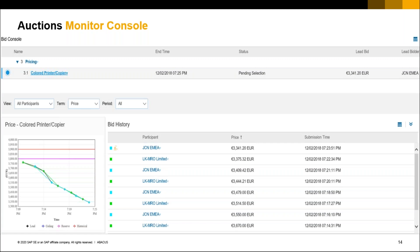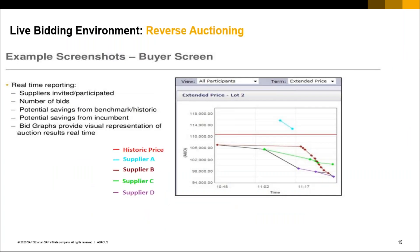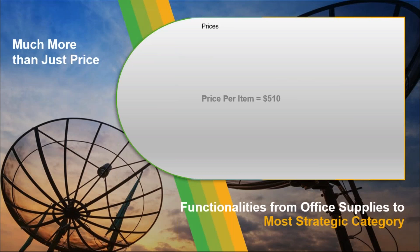With SAP Ariba you get competitive auction monitoring — you can monitor supply, see the graph, see if they are leading or not, what price they quoted last, what the revised price is, what was the first price, what's the last price, and who is the leading supplier. Here it shows the lead bid is 3,341 and the lead supplier is JC and EMEA. This is a real-time report showing the number of suppliers invited and participated, number of bids, a bid graph visual representation, and reserve price — shown as a red line on the graph.